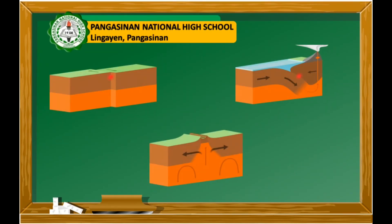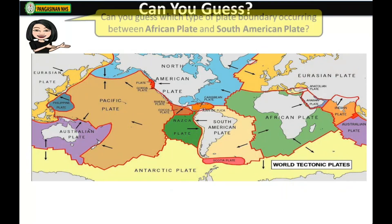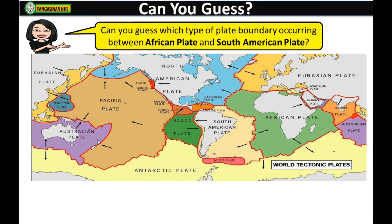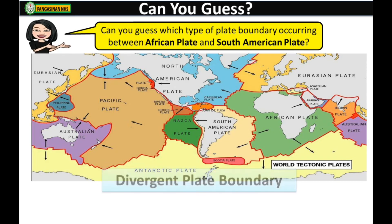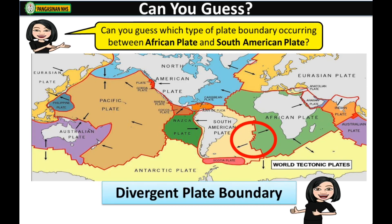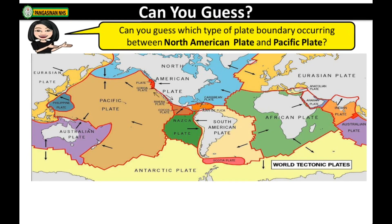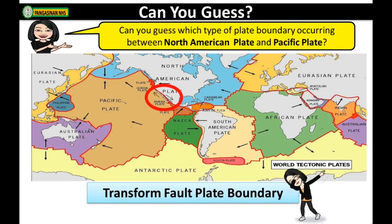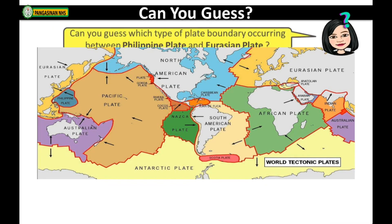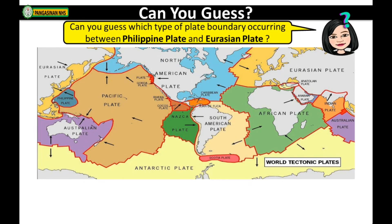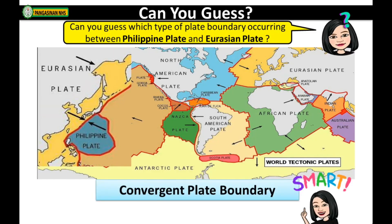Let's find out if you learned something from our lesson — let's play a game! Can you guess which type of plate boundary occurs between the African plate and the South American plate? The correct answer is divergent plate boundary. Can you guess which type occurs between the North American plate and the Pacific plate? That is correct — transform fault plate boundary. Finally, can you guess which type occurs between the Philippine plate and the Eurasian plate? You are absolutely correct — it is convergent plate boundary.